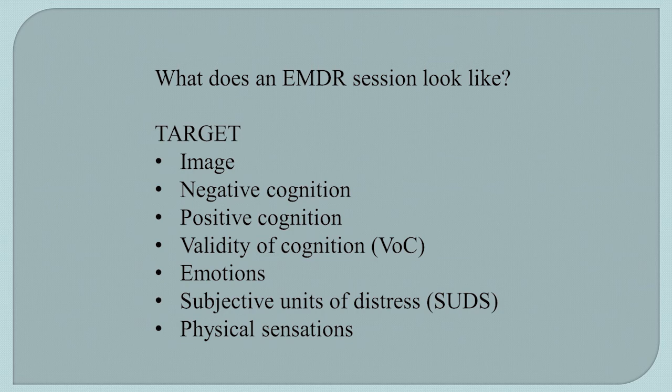When you think of that image and those positive words, how true do they feel to you? That's our validity of cognition. When you think about the incident and connect it with the negative cognition, what emotions come up for you? We take a SUDS reading — zero to ten, how disturbing does it feel to you? Ten's the highest, zero's neutral or not at all. Then we identify the physical sensations.